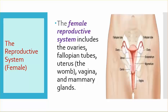The female reproductive system includes the ovaries, fallopian tubes, uterus (the womb), vagina, and mammary glands.